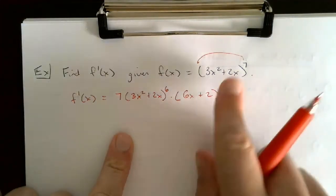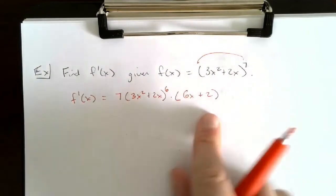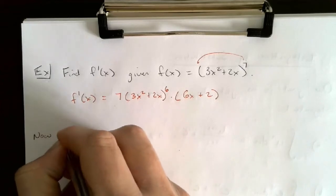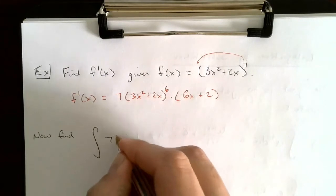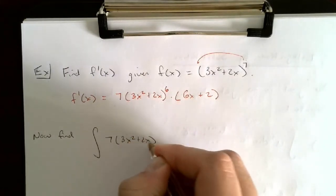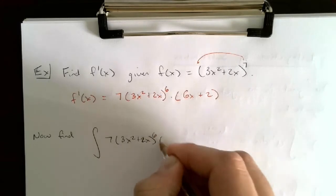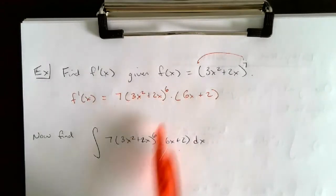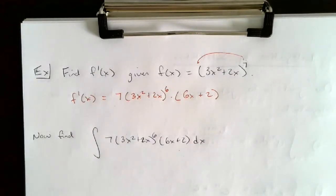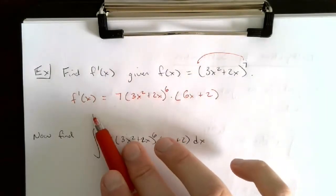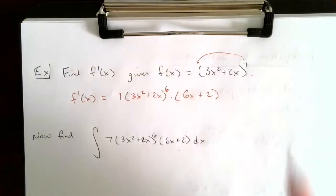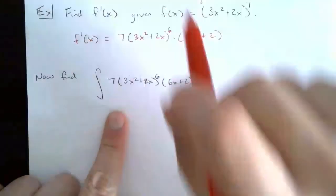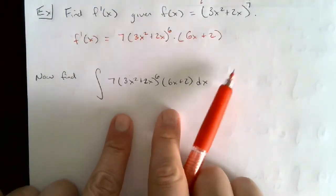So f′(x) = 7(3x² + 2x)^6 · (6x + 2). Now suppose I said: find the anti-derivative of 7(3x² + 2x)^6 · (6x + 2) dx. We know what it should be because we just took that derivative, but if you were given just this integral without the context above, you probably wouldn't know what it integrates to.